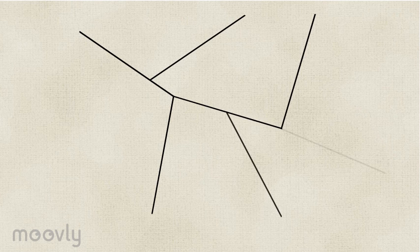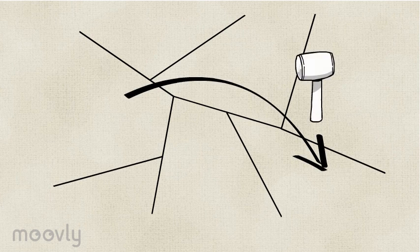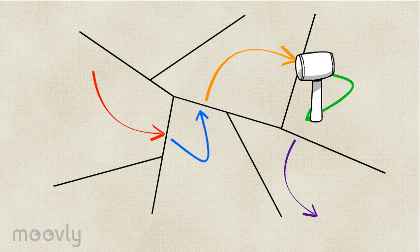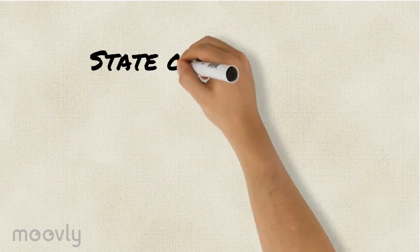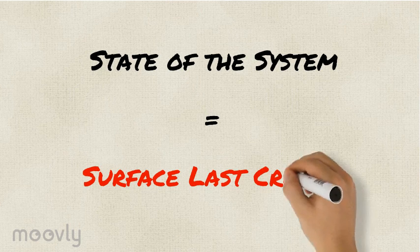Milestoning can be used to examine a complicated system with many moving parts, breaking down one long process into many shorter ones. In Milestoning, everything is divided by a series of surfaces. The state of the system is defined as the surface that was last crossed.